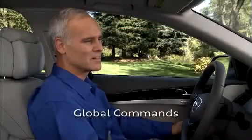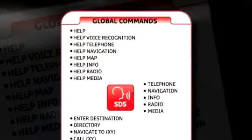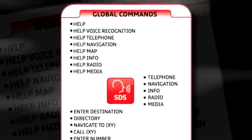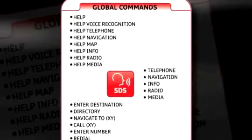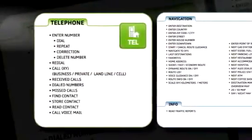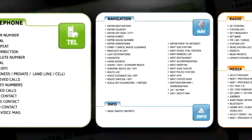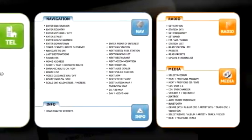The voice recognition system uses two basic types of commands: global commands and function commands. Global commands can be accessed from any menu and include commands such as "help," "telephone," or "enter destination." Function commands can only be used within a specific MMI function, such as "enter number" in the telephone function or "set station" in the radio function.